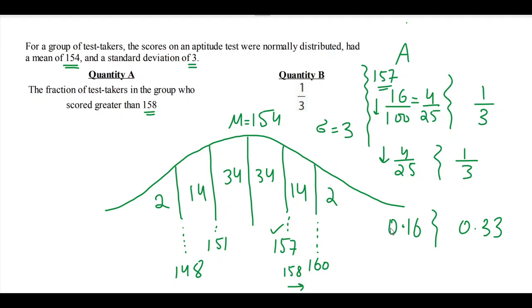Since quantity B is significantly greater than the overall fraction of the people which are bigger than 158, therefore the answer must be B. Did I get this right, Nina? Yes. Okay, cool. So 16 over 100, you used the values that are above 157?